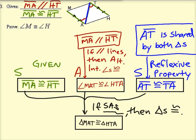Now, we're not quite finished with this proof. Yeah, we've proven that the two triangles are congruent, MAT and HTA, but that's not exactly what we're trying to prove. We want to prove that angles M and H are congruent. In other words, we want to prove that these angles are congruent, H and M.